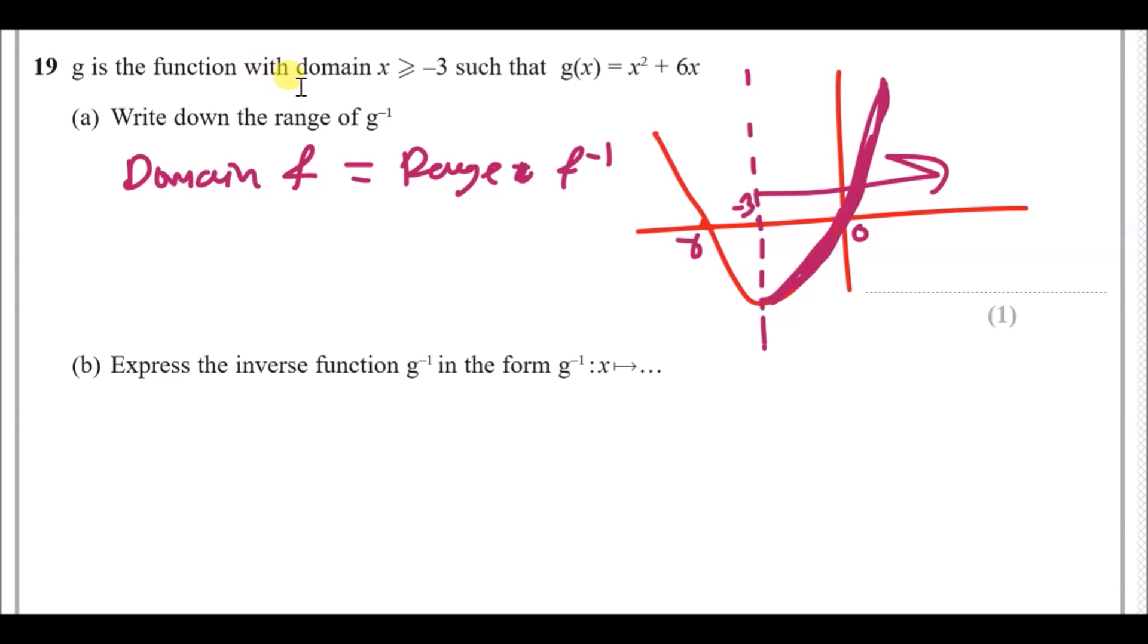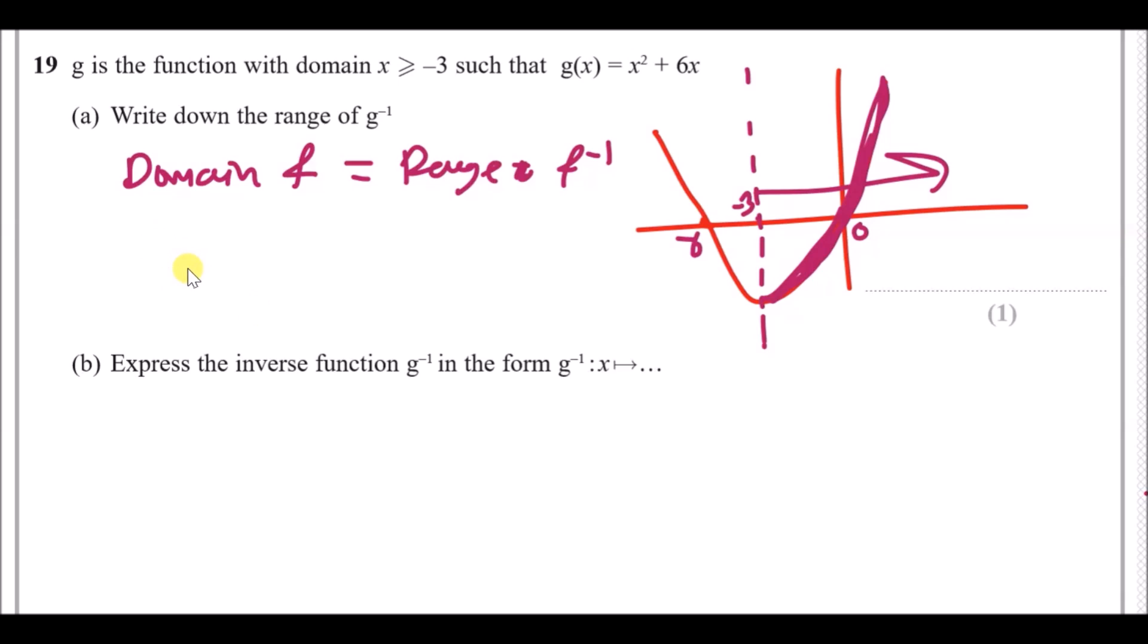So g is the function with domain x greater equal to negative three, such that g(x) equals this quadratic function. Now domain is simply the values that x is allowed to take in a function. This graph here, if we factorize it, it'll look a bit like this. Now when it says x greater equal to negative three, this means that we only care about the curve after x equals minus three, so after minus three onwards. We don't care about the left hand side at all. According to this question, it says write down the range of the inverse of g. Now there's a rule here. If you know the domain of a function, then the range of its inverse is equal. So therefore we can say that y is going to be greater equal than minus three, which is the range.